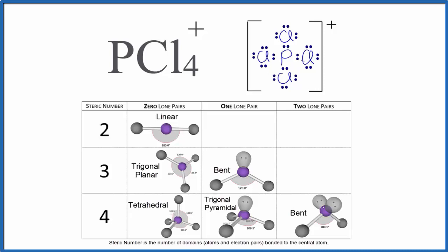If we have our Lewis structure, we can count up what's called the steric number and figure out the molecular geometry. That's the number of things bonded to the central atom, the phosphorus here. We have one, two, three, four things bonded to the central phosphorus. So we go down to four and we don't have any lone pairs.